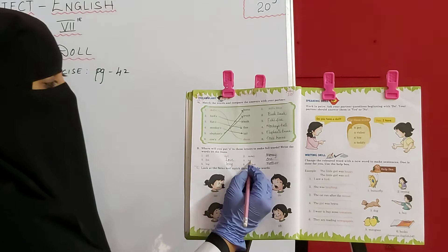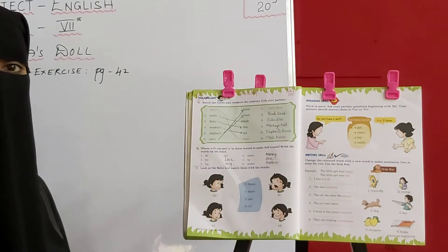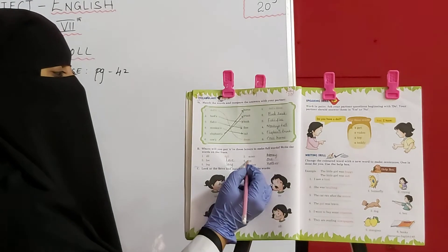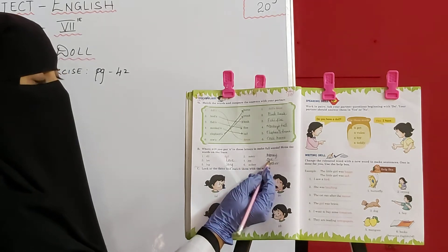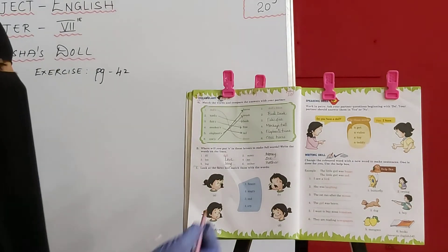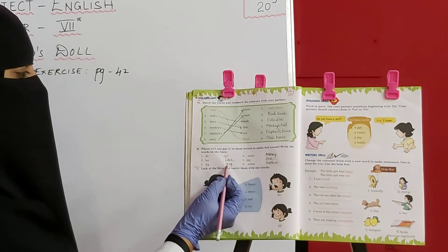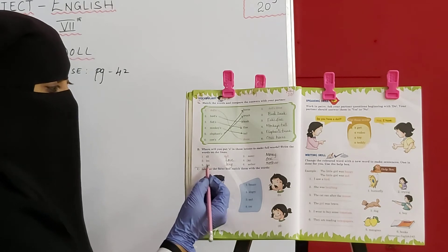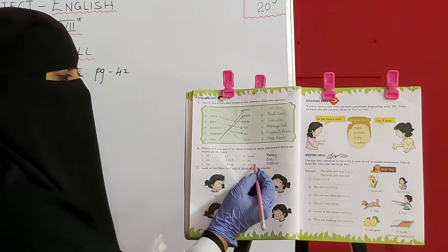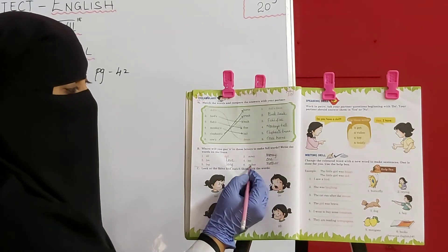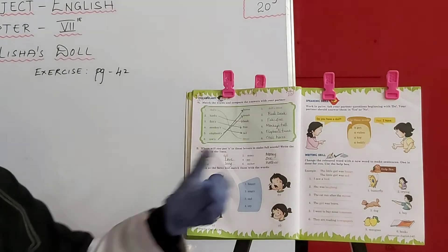Abhi yahaan two words. Toh hum yahaan 'o' kahaan add karenge? Last mein? Starting mein? Ya middle mein? No, we will add in the starting. Starting mein add karne se yeh O-N-E-Y — one ban jayega. Ek meaningful word ban jayega. Then L-N-G — toh hum kya karenge? Middle mein 'o' add karenge. Toh L-O-N-G — long ho jayega. Abhi next one: M-T-H-E-R. Toh M ke baad 'o' add karenge. Toh yeh word ban jayega: Mother. M-O-T-H-E-R — Mother.